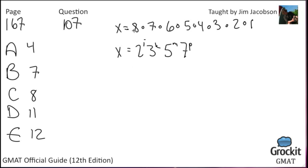The second expression for x uses 2, 3, 5, and 7 — all prime numbers. So that bottom expression is the prime factorization of x. We just have to figure out how many 2s, 3s, 5s, and 7s are in the product 8 × 7 × 6 × 5 × 4 × 3 × 2. Those are our values for i, k, m, and p. Breaking each number down: 1 has no factors, 2 has one 2, 3 has one 3, 4 is 2×2, 5 has one 5, 6 is 2×3, 7 has one 7, and 8 is 2×2×2.